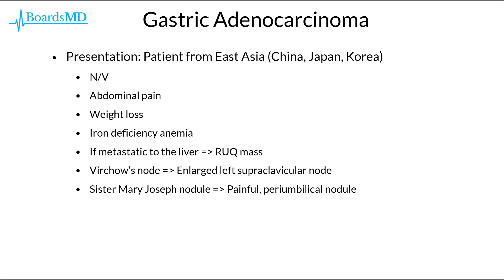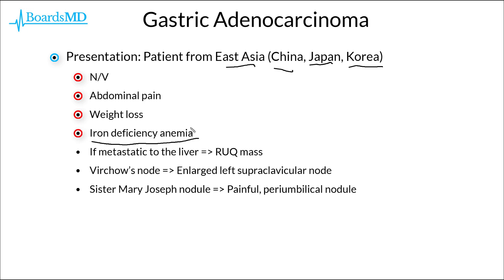Let's jump into our first type of gastric cancer, which is gastric adenocarcinoma. This is going to present classically as a patient from East Asia — in particular China, Japan, or Korea. These patients are going to present with nausea and vomiting, abdominal pain, and weight loss. These patients also classically present with iron deficiency anemia.